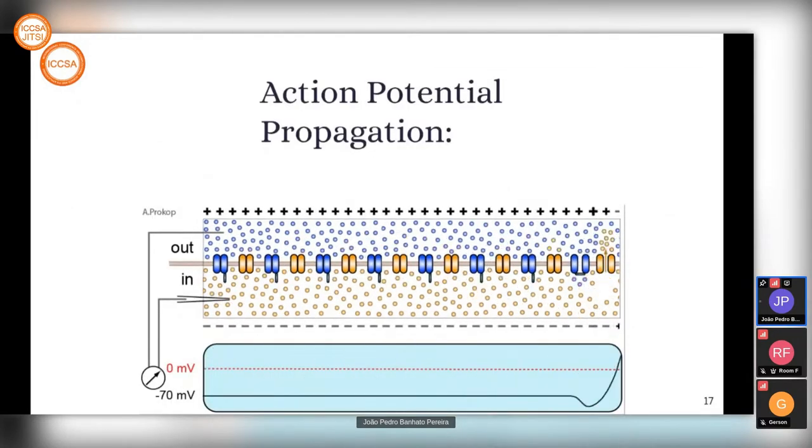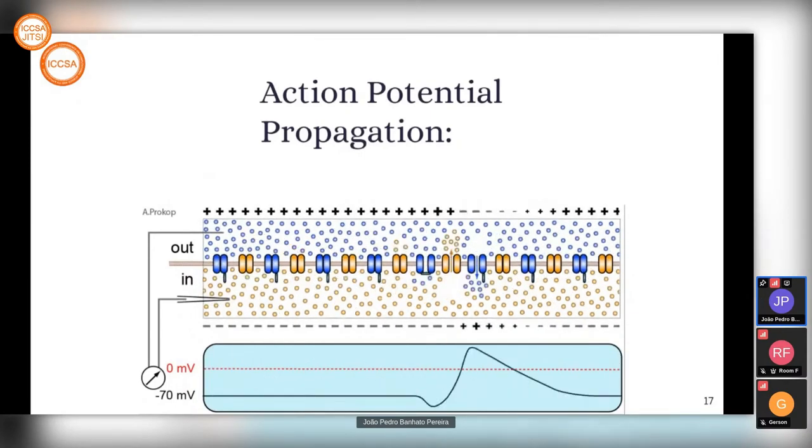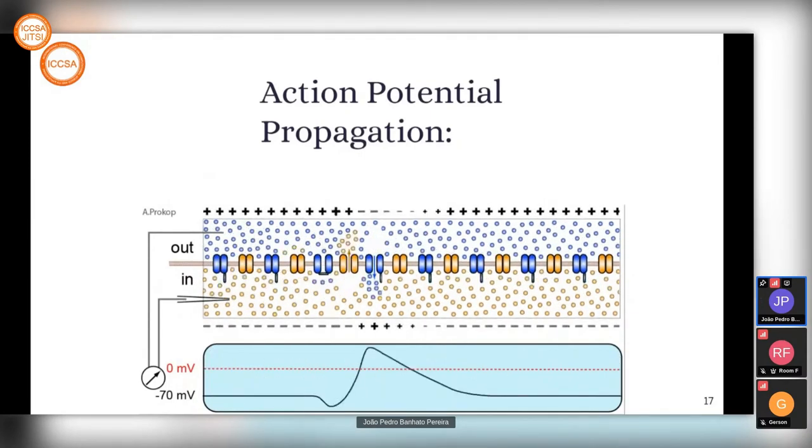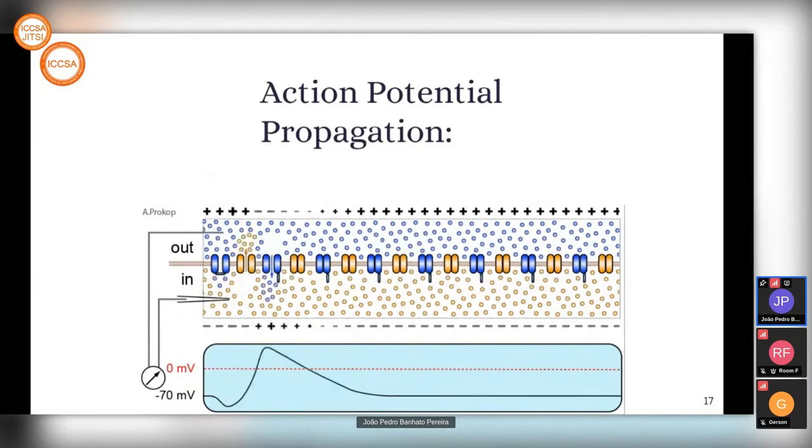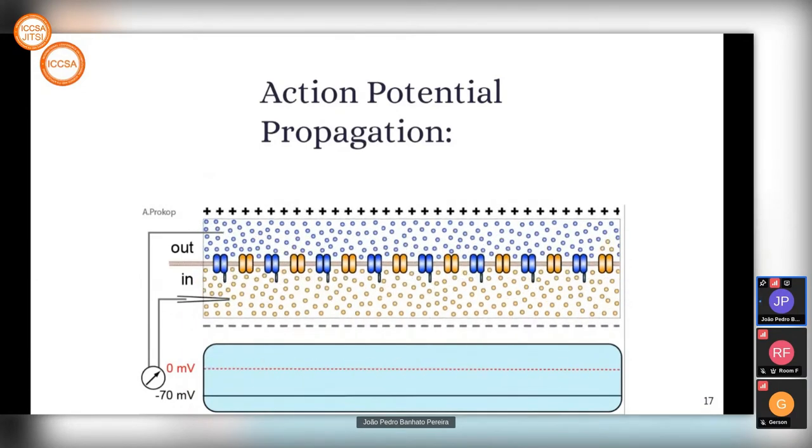Regarding action potential propagation, when a stimulus is applied to a cell, it triggers the depolarization of the cell, which affects neighboring cells and propagates the stimulus.